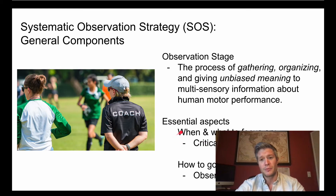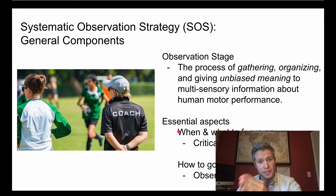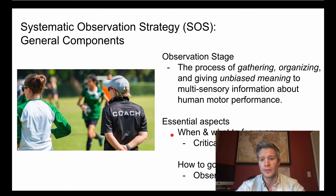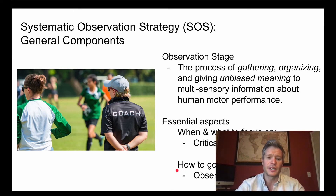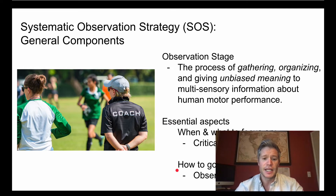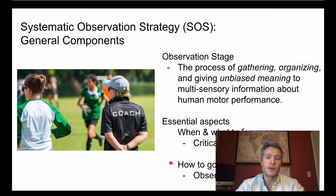Another essential aspect is knowing when and what to focus on. A systematic scientific approach to identifying critical features gives us direction for observation. One of the models addresses attention specifically. There's also the question of the best place and method to observe for a certain sport or skill — observing how someone swims in a pool is going to be very different than watching an archer practice their sport.